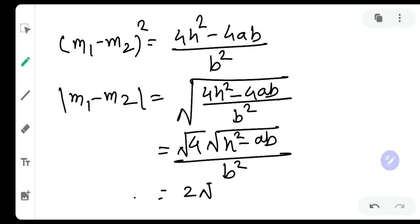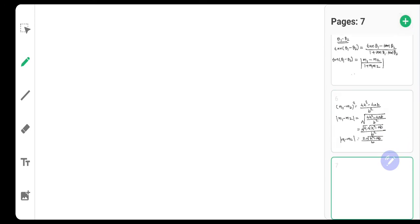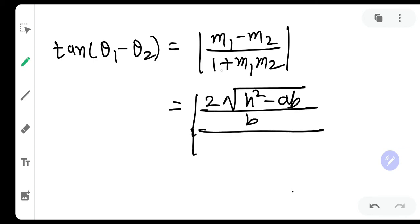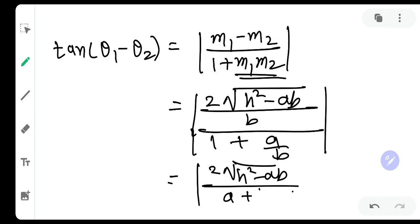So this is our M1 - M2, which is 2√(H² - AB)/B, and 1 + M1M2 is A/B. So 1 + M1M2 = (A + B)/B. We will just cross multiply and get the answer. So our final answer would be tan(θ1 - θ2) = |2√(H² - AB)/(A + B)|.